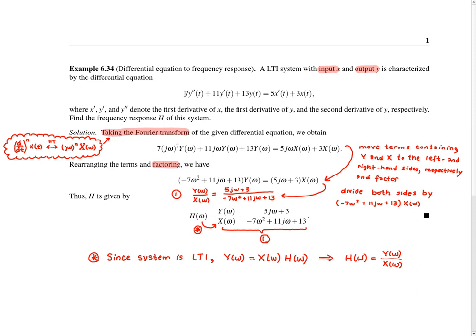The first step is to take the Fourier transform of the defining differential equation, using the differentiation property of the Fourier transform: every time we take a derivative, we multiply by j omega in the frequency domain. Applying this to the differential equation gives us a frequency domain equation where each derivative becomes a multiplication by j omega. We then collect all terms involving big Y on the left side and all terms involving big X on the right side, factoring out big Y and big X respectively.